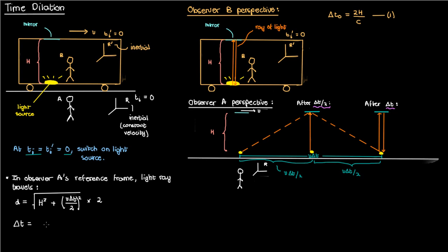To find the total time delta_t for the ray of light to travel back to the source in observer A's reference frame, we need the total distance divided by the speed of light. What is the speed of light in A's reference frame? It's just c — the speed of light is constant in all inertial reference frames according to the second postulate of special relativity.